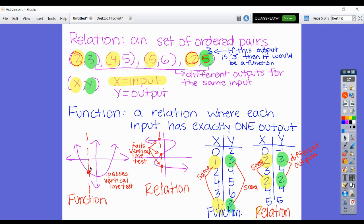A relation is just any set of ordered pairs. It doesn't matter what the ordered pairs are, as long as it is a set of ordered pairs. Remember, an ordered pair is just an X and a Y. Your X is your input, your Y is your output.